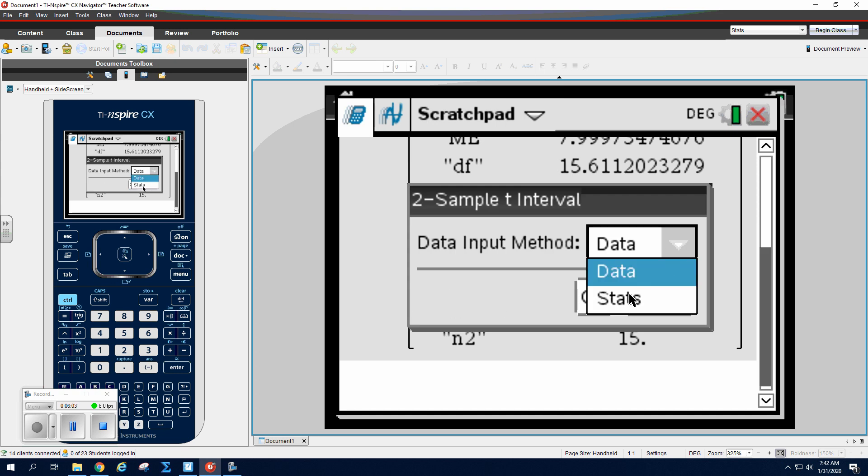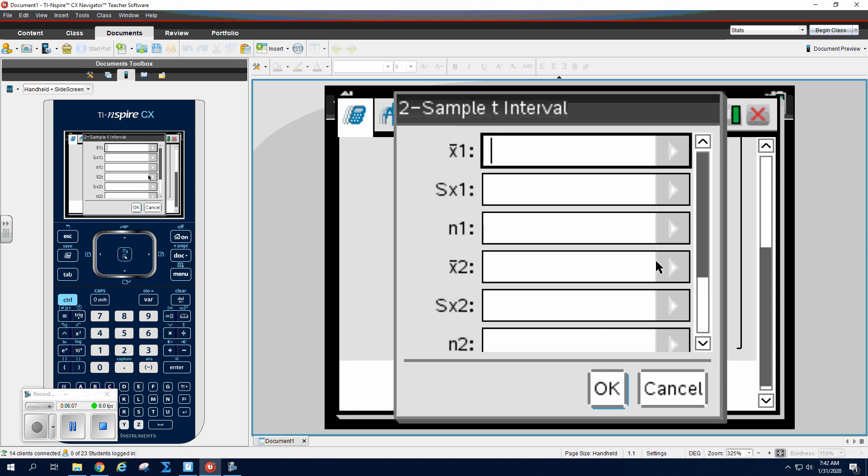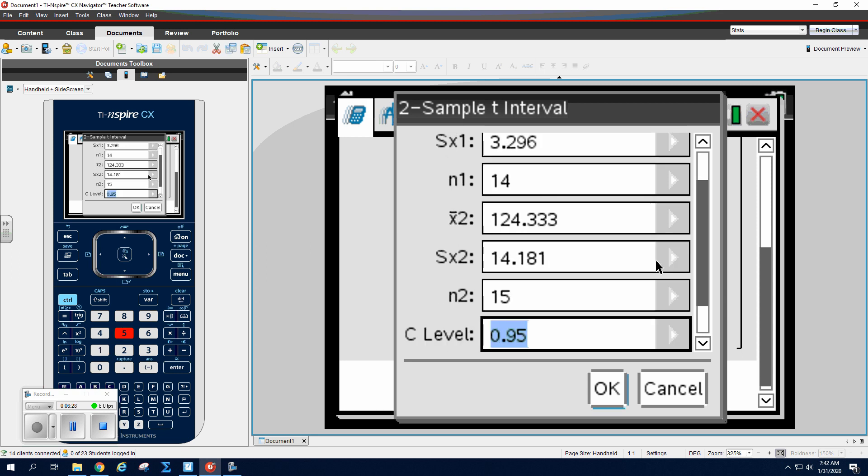And this time we're going to plug in the statistics given to us. So x-bar₁ is 113.357, and the standard deviation for your Sunshine Estates is 3.296, and n is 14. Okay, the other one is 124.333 for your mean, standard deviation 14.181, and your n. Okay, confidence level, change it to whatever it asks for. It said 95%, and don't ever change pool. Just leave it.